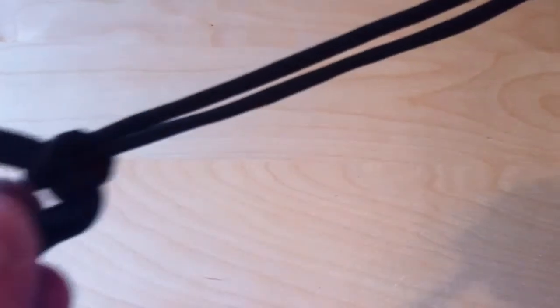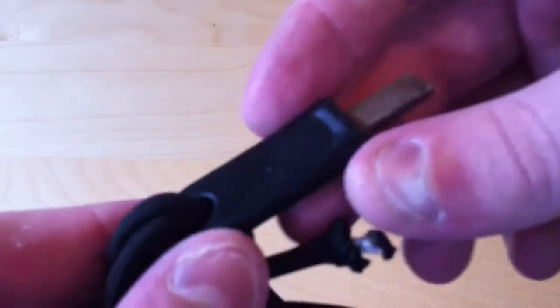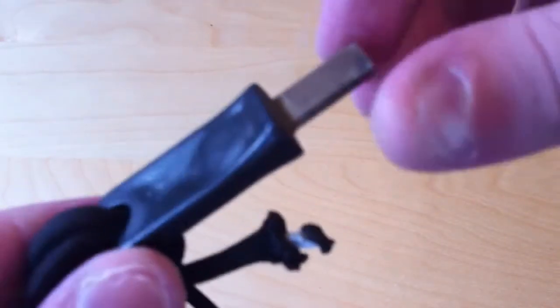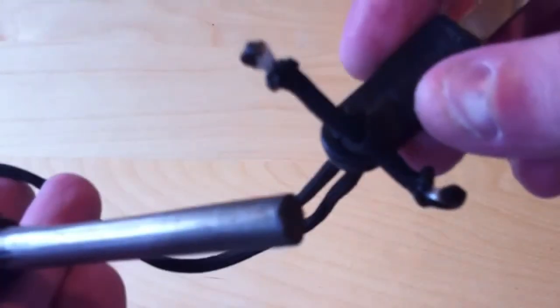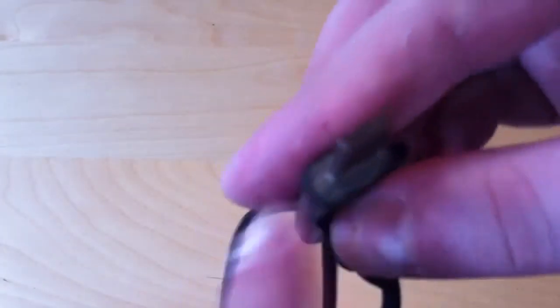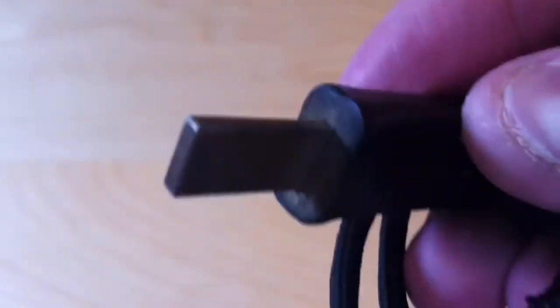It also comes with this length of paracord with their Firesteel Striker attached. I tried other things to strike this with. My Becker BK-13 Remora, my SEAH-1. And this did the best. It's basically just a very squared off piece of carbon steel, as you can see. Very square.